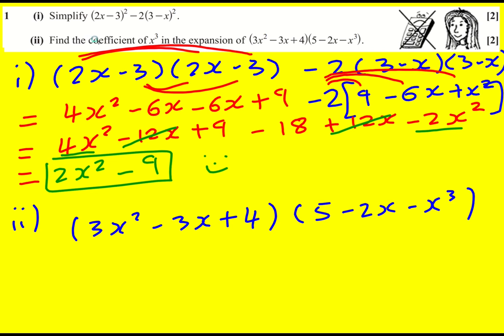We're only interested in the coefficient of x cubed, that is the number that goes in front of x cubed. How can I get that? Well, I can get it, I'm going to start from this bracket on the left hand side, I can get it if I do 3x squared times minus 2x, because that would give minus 6x cubed.